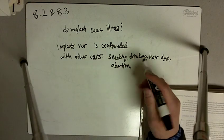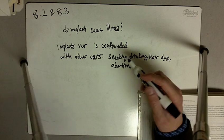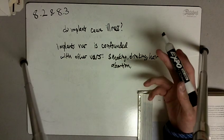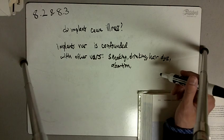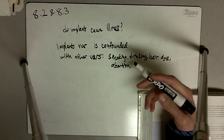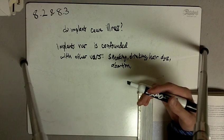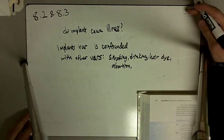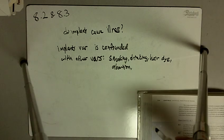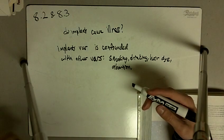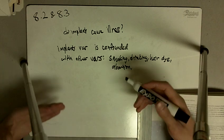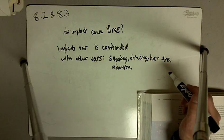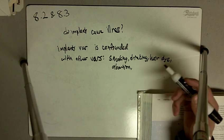Or there could even be a lurking variable behind something that causes someone to be more likely to get implants and more likely to be smokers, drinkers, hair dyes, or abortion. So perhaps maybe there's a lurking variable like self-image or anxiety or things like that that will make someone more likely to get implants that also make them more likely to be smokers, drinkers, or whatnot, and also sick in that case.